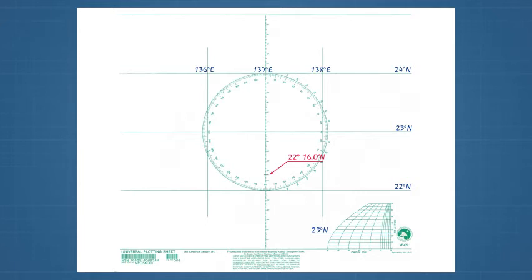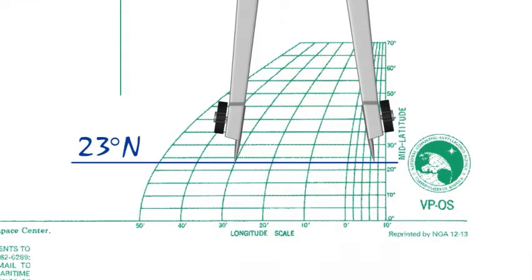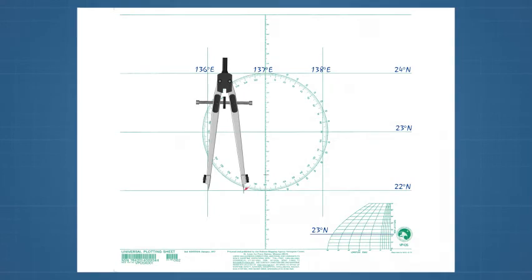Remember, north latitudes increase upwards. For longitude, measure 30 and 7 on the longitude scale. Make a mark at 37 minutes right of the 136 degrees east longitude. These marks intersect at the 1400 position.